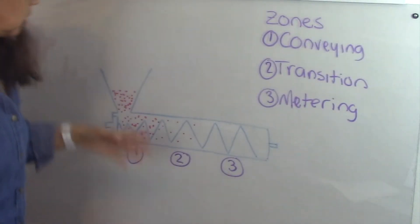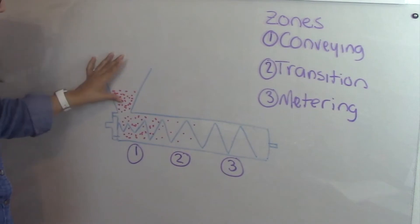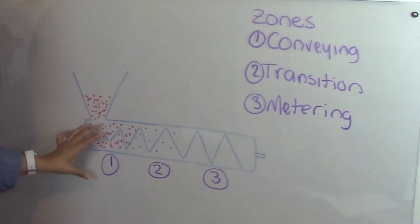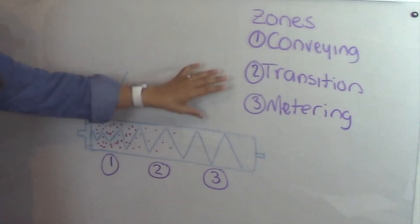This is basically how it works. You have the hopper, you fill the hopper with the pellets. The extruder has three zones. Zone 1 is the conveying zone, Zone 2 is the transition zone, and Zone 3 is the metering zone.